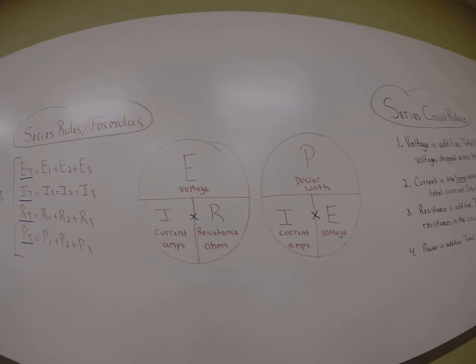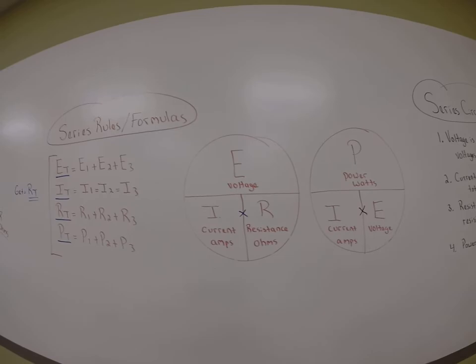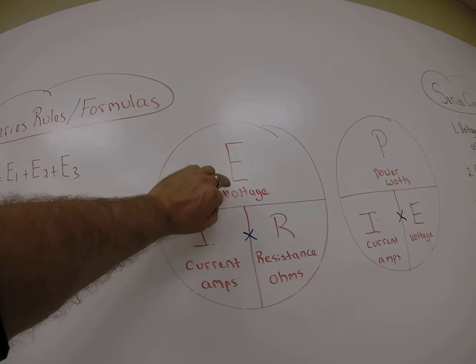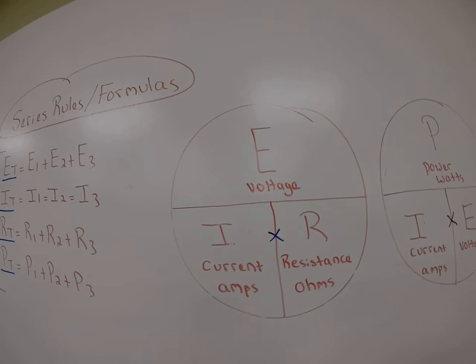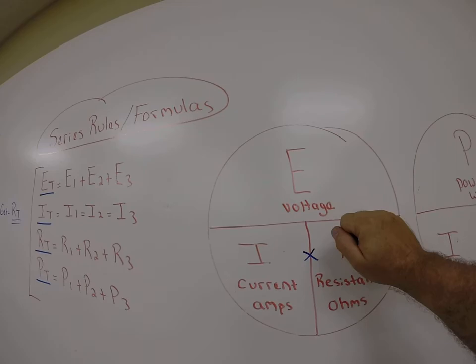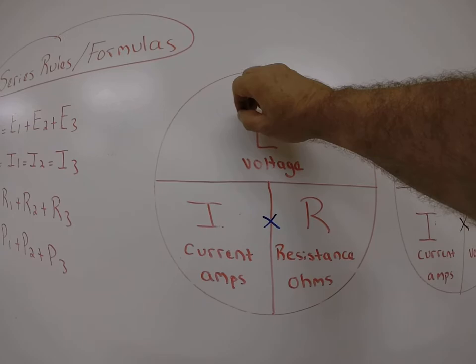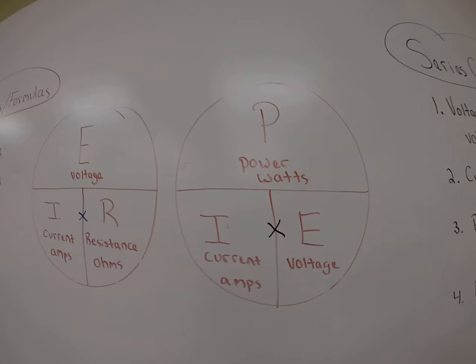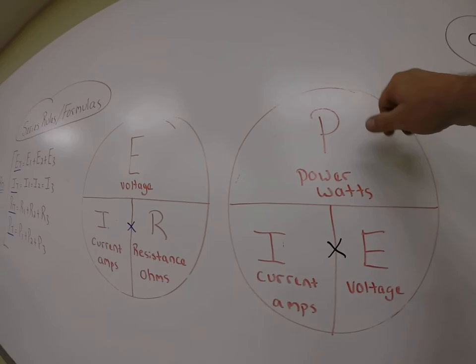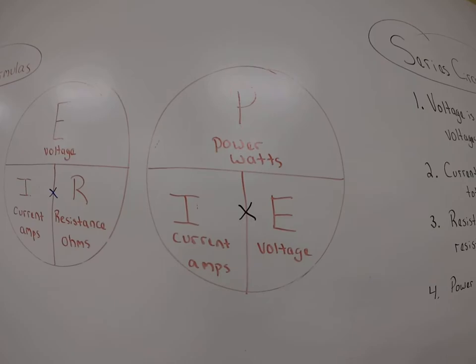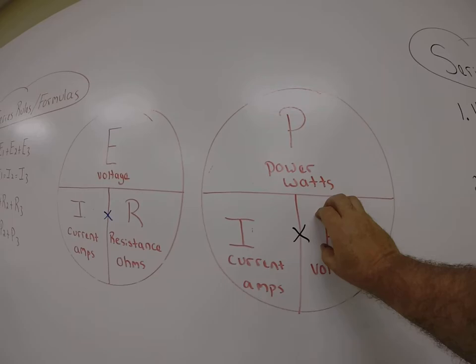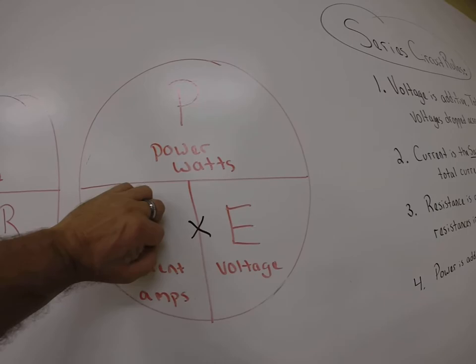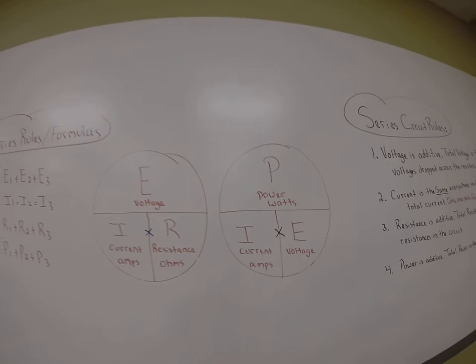How do we get to breaking these calculations down? We use a simple pie chart of Ohm's law. If I wanted to find current, I would put my hand over current and I'm left with voltage divided by resistance. If I was trying to find resistance, I would cover it up — voltage divided by amperage. If I was trying to find voltage, I would cover up the voltage part and it would be amps times resistance. Same type of wheel: if I was trying to find power, it would be I times E, which is VA, which gives me watts. If I was trying to find voltage, it would be power divided by amperage. And if I was looking for amperage, it would be power divided by voltage.